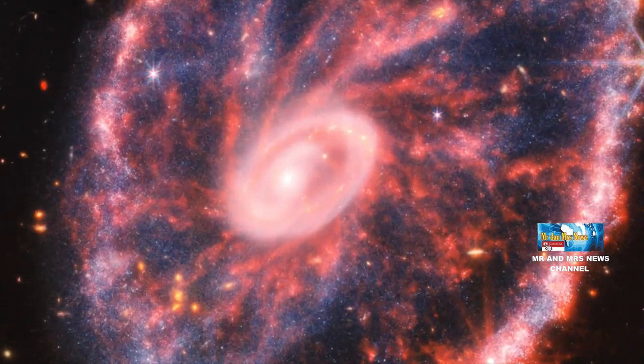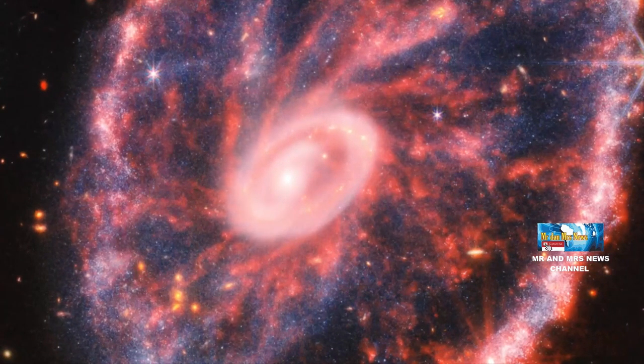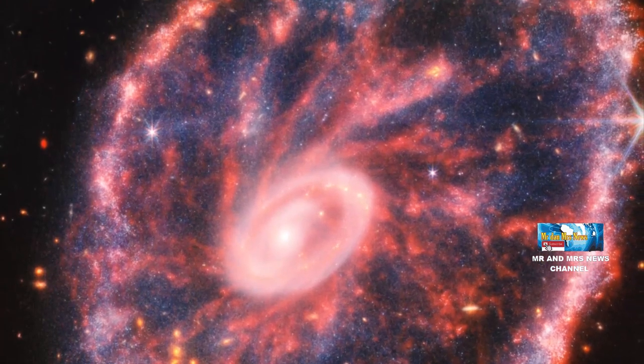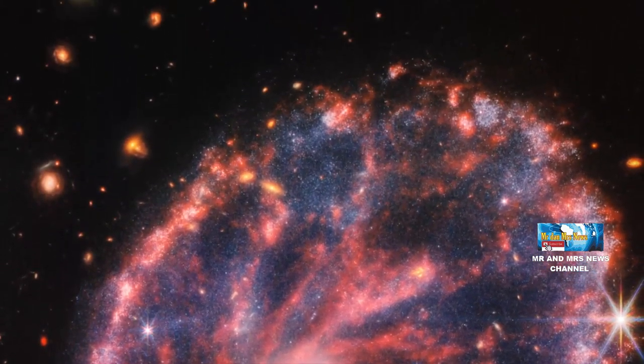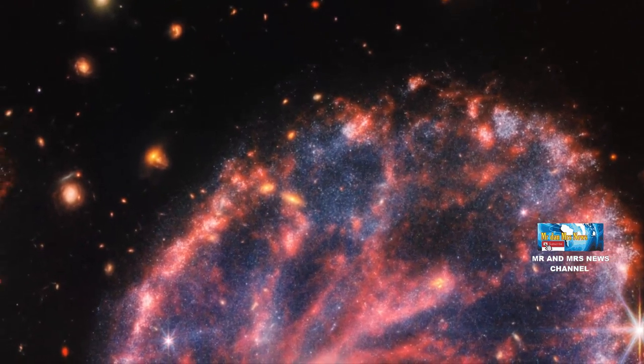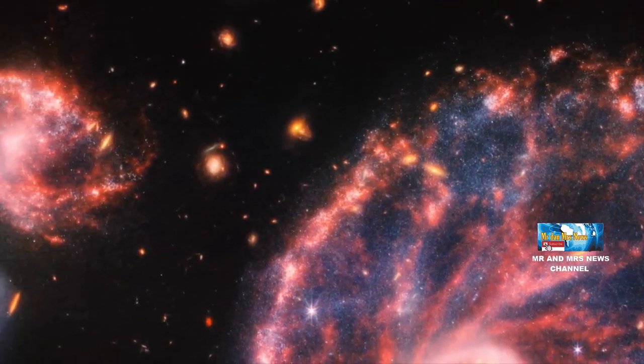Teleskop Hubble sebelumnya telah menangkap gambar galaksi cincin yang langka, yang diyakini sebagai galaksi spiral seperti Bima Sakti sebelum ditabrak oleh galaksi yang lebih kecil. Namun, teleskop James Webb memiliki jangkauan yang jauh lebih besar.